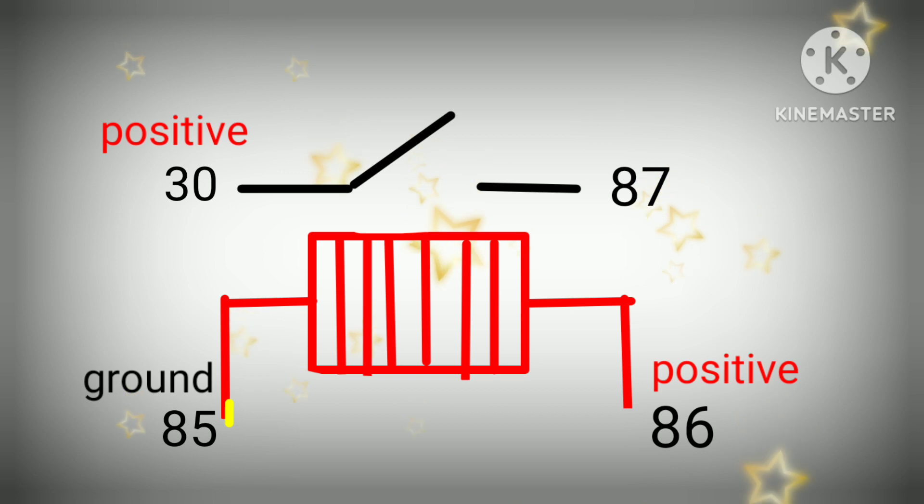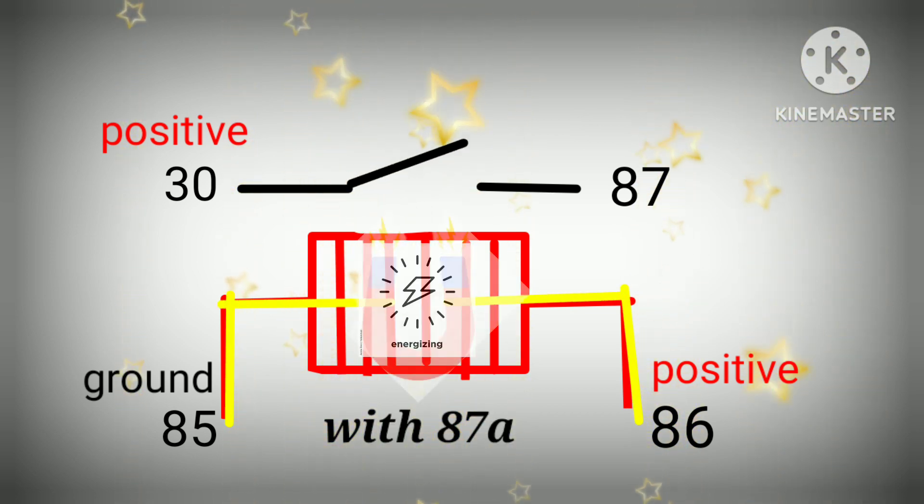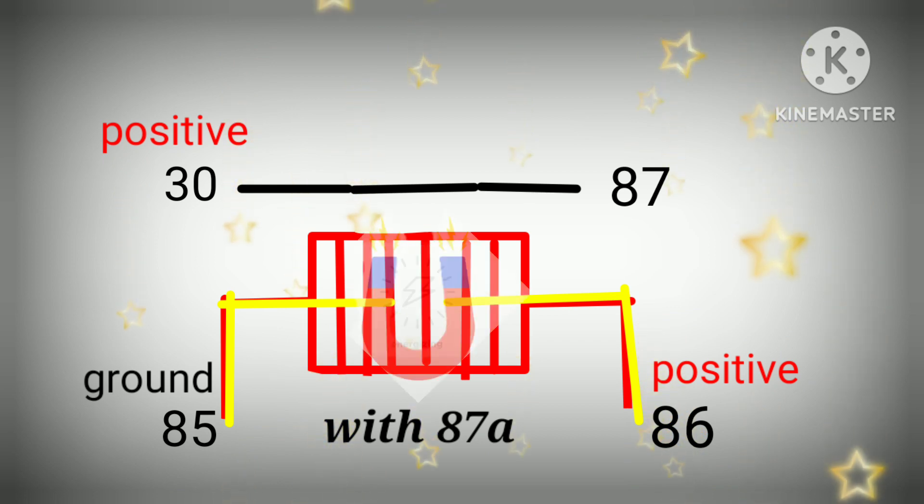This is the wiring diagram of a relay with 87a. When you disconnect positive or negative from relay, the number 30 will disconnect to number 87. The number 30 will back to its normal position and it will connect to number 87a. The current will flow to number 87a.